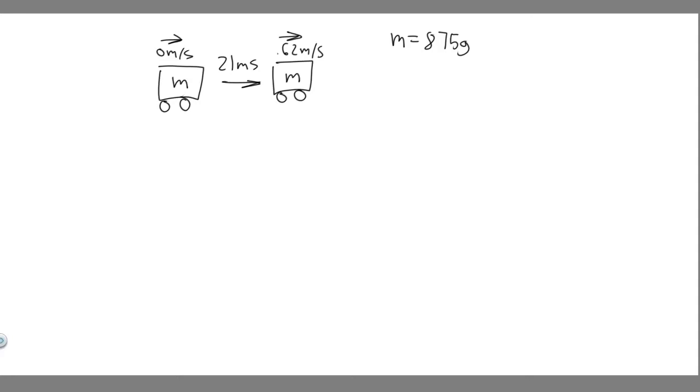In this problem, we're told the electric motor of a model train accelerates the train from rest to 0.62 meters per second in 21 milliseconds. The total mass of the train is 875 grams. Find the average power delivered to the train during its acceleration.